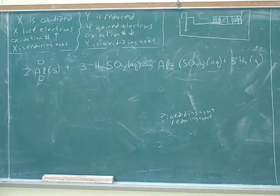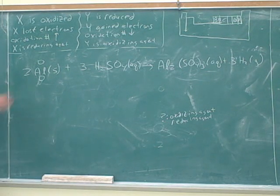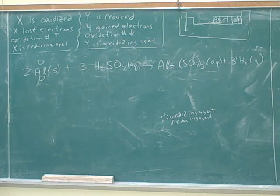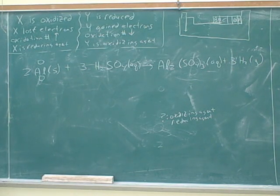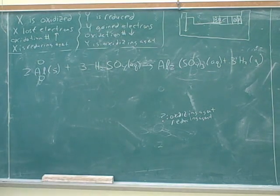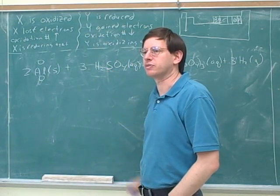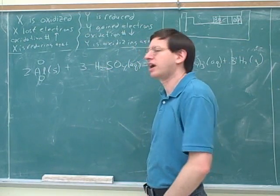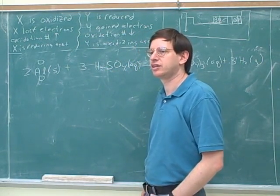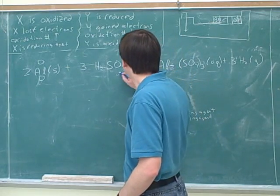That's one of the rules: an element that's by itself has a charge of zero, because there simply is no charge on it — a monatomic element has a charge of zero. Now, how do we find the oxidation numbers in the compound? We should start with oxygen.